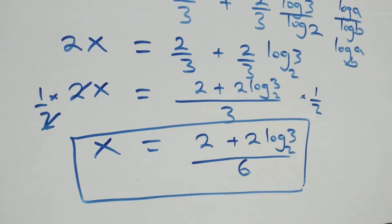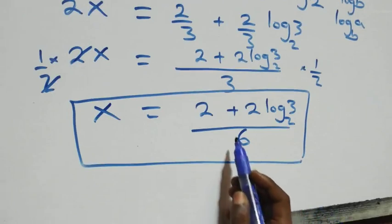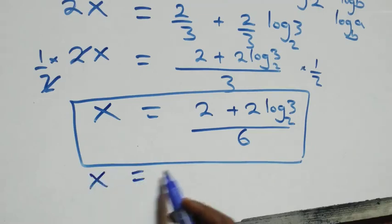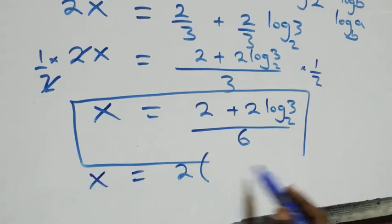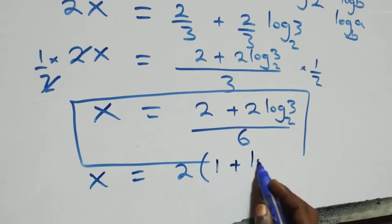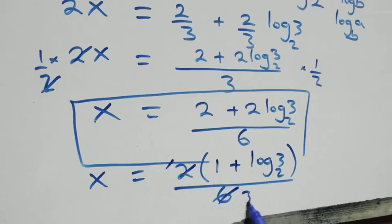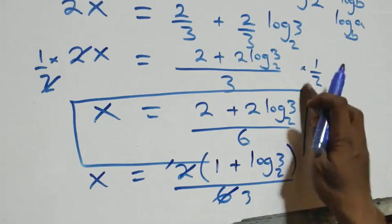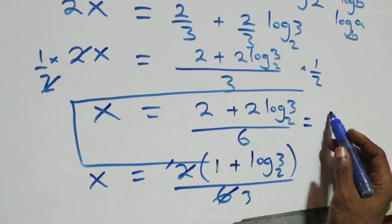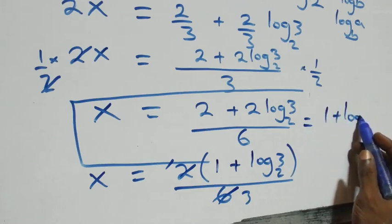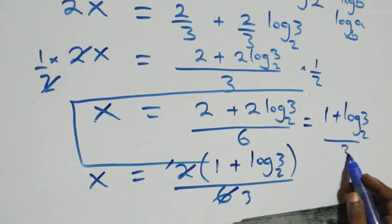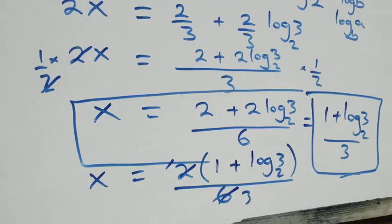We can simplify this by factoring 2 from the numerator: x equals 2 times (1 plus log 3 base 2), all over 6. The 2 cancels with the 6 to give 3, so x equals (1 plus log 3 base 2) over 3.